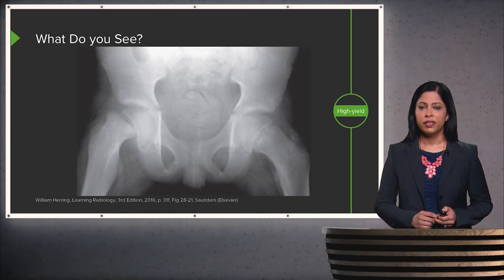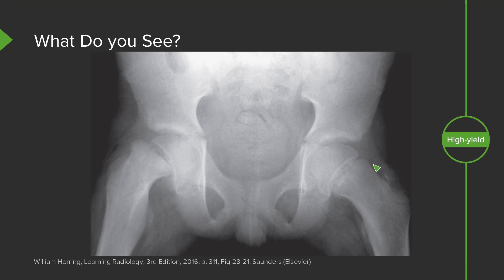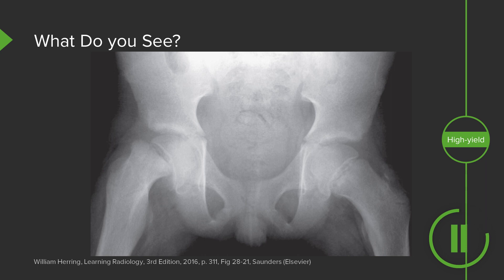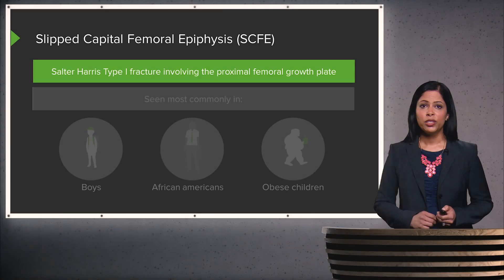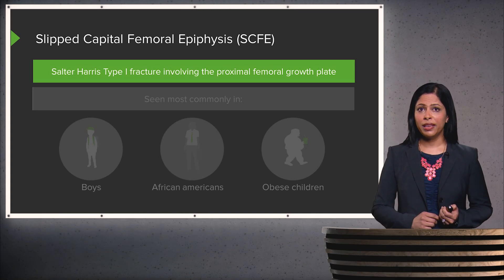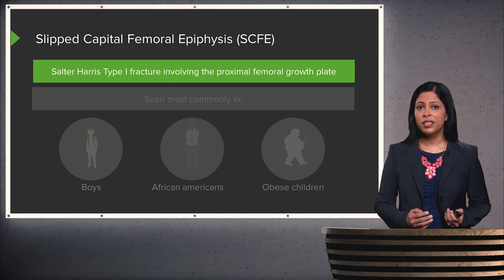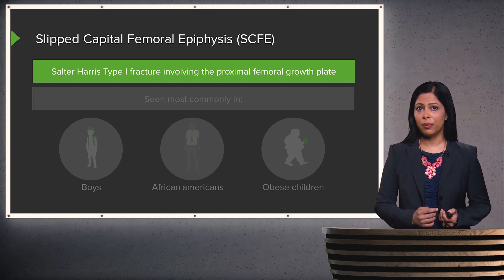This is an x-ray of the pelvis in a skeletally immature patient. You can see the growth plates are open on the hips here. So what is the abnormality? This is an example of slipped capital femoral epiphysis, or SCFE. This is a Salter-Harris type I fracture that involves the proximal femoral growth plate.